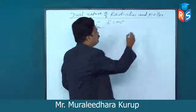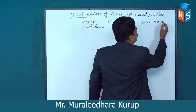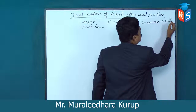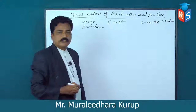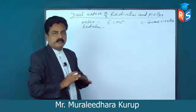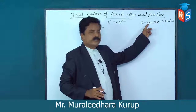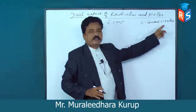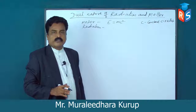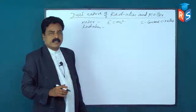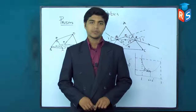The velocity of light in free space is 3 into 10 raised to 8 meters per second. According to the theory of relativity, all are relative, all are in motion, nothing is absolute. The velocity of light in free space is constant — this is the first postulate of the theory of relativity.